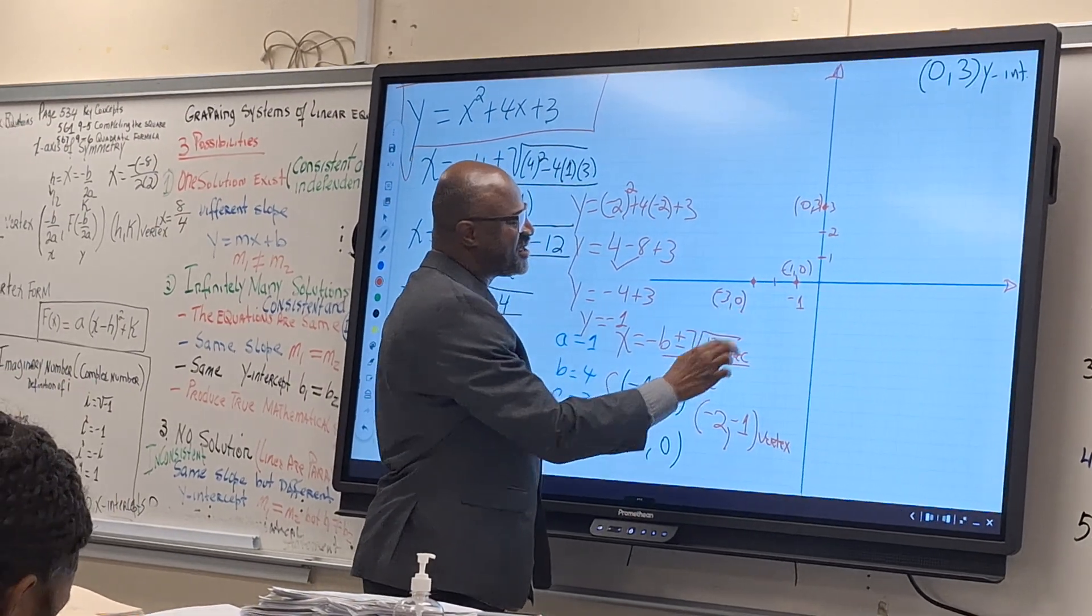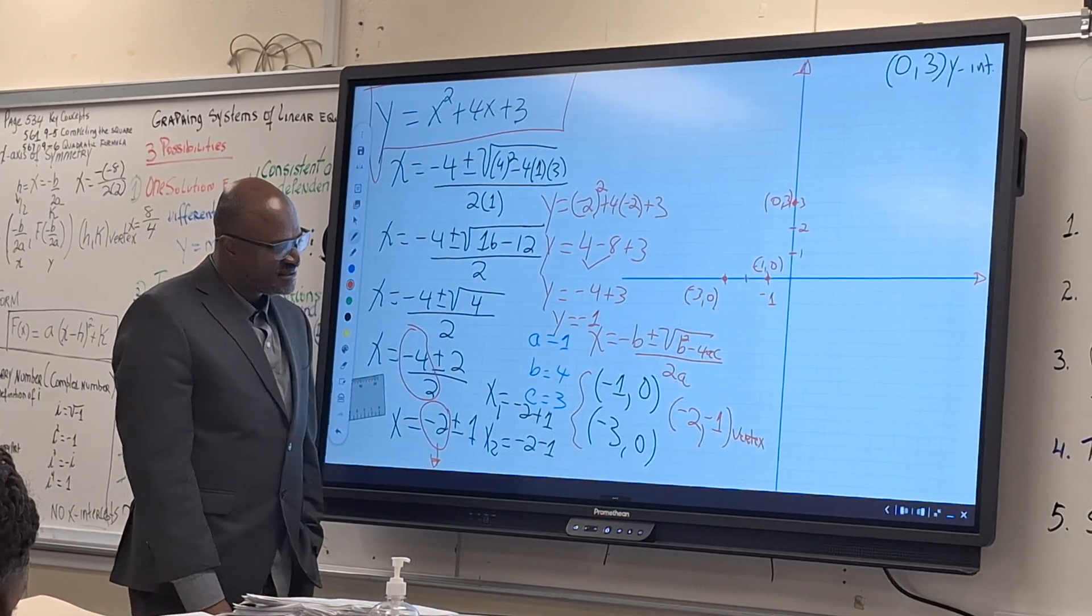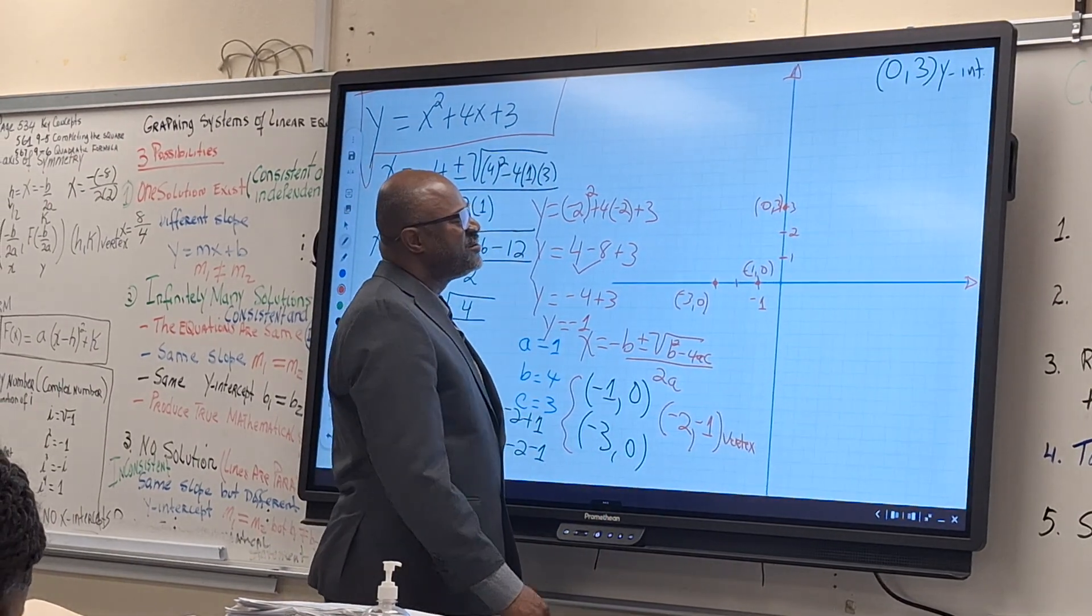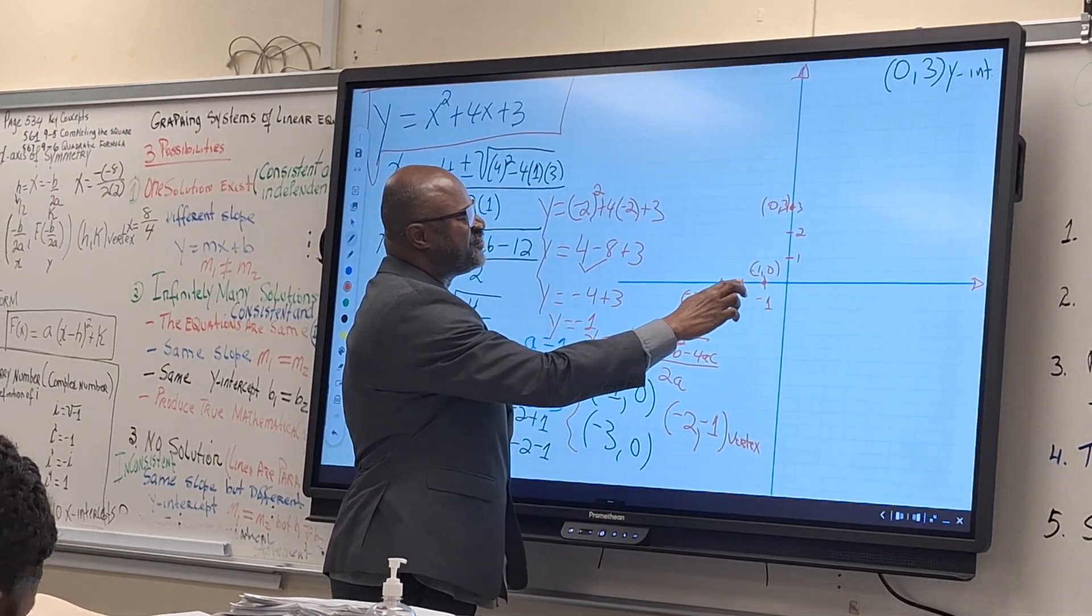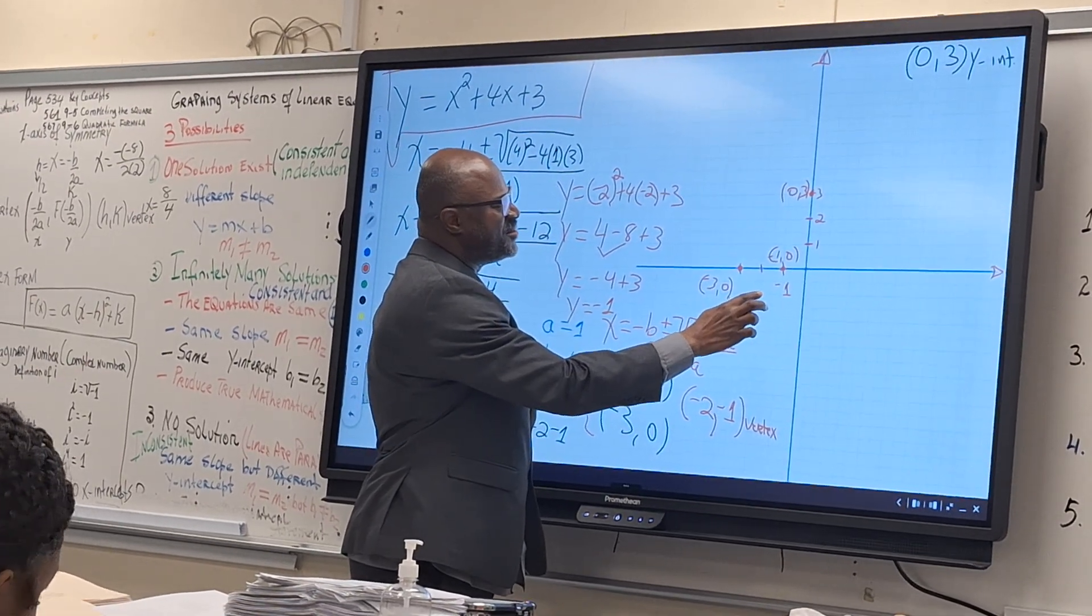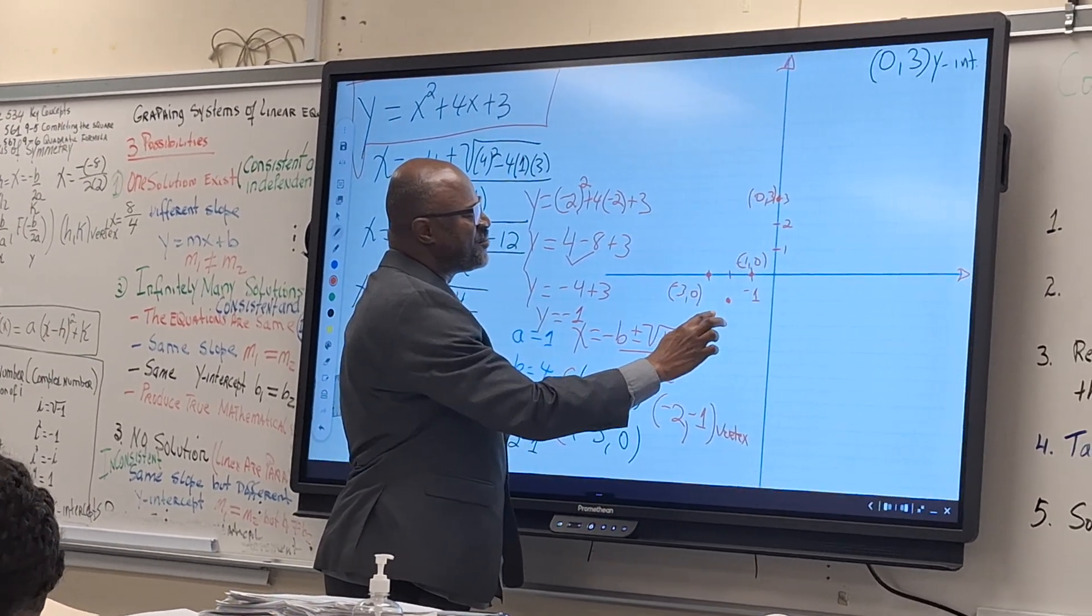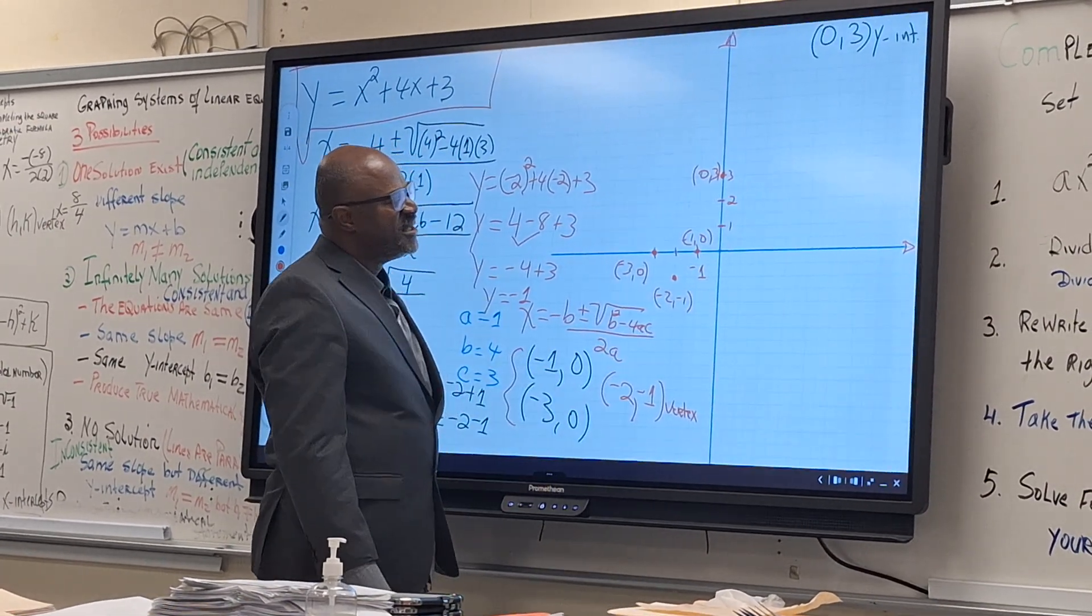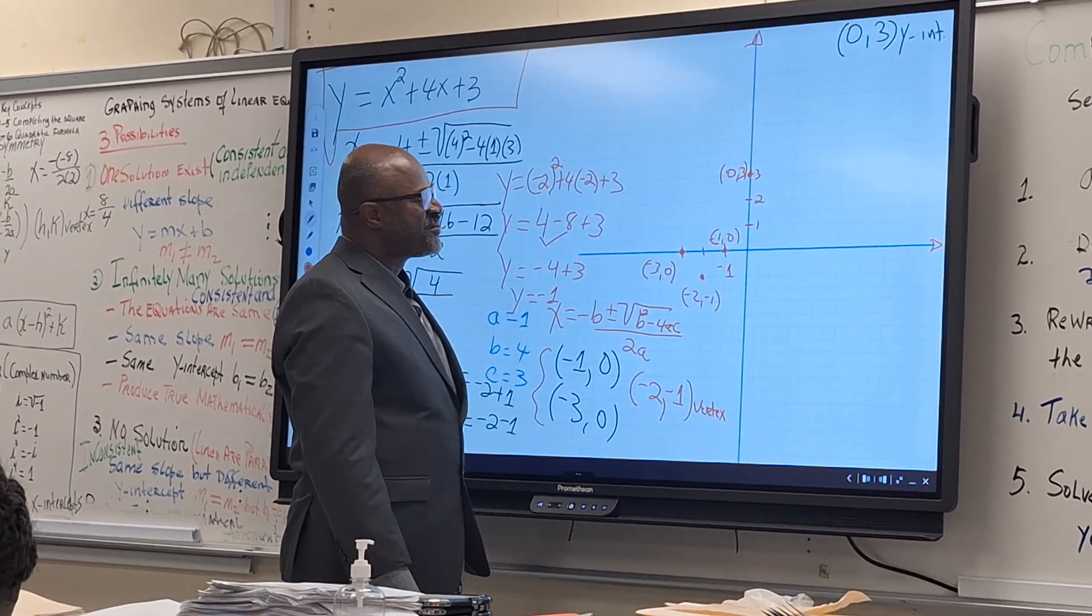And now we have our vertex. What is the vertex? Negative two, negative one. Where do you go? This is negative two, and you go down one unit, and you drop it here. That would be negative two comma negative one. Now you should be able to create that graph.